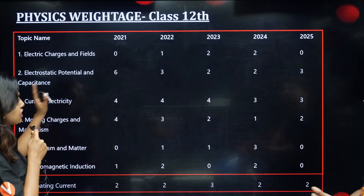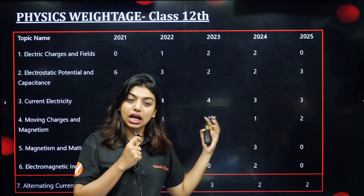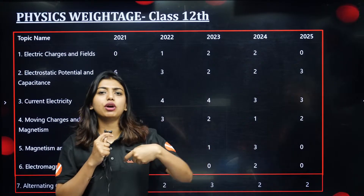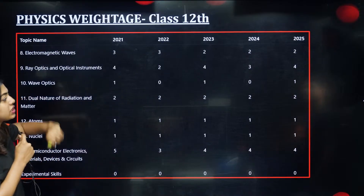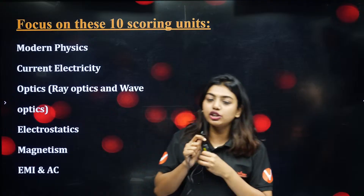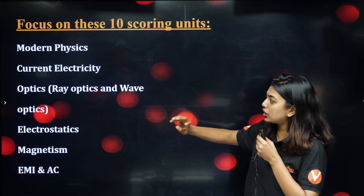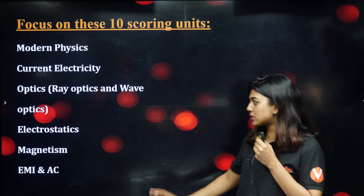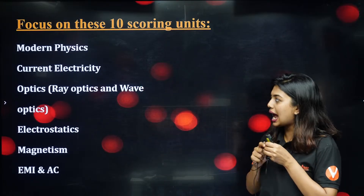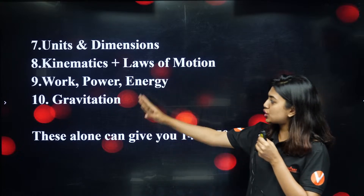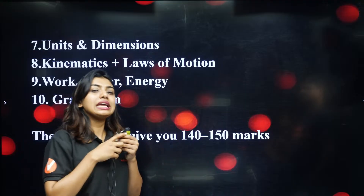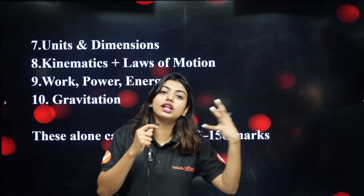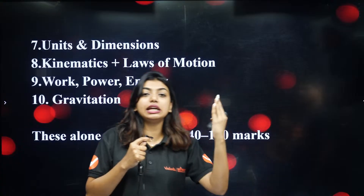Volume 1 includes Current Electricity. Class 12 topics are very important — you can prepare for NEET as well, but you have to practice more PYQs and MCQs. The top chapters you are not supposed to miss are: Modern Physics, Current Electricity, Optics — Ray Optics and Wave Optics — Electrostatics, Magnetism, EMI and AC, Units and Dimensions, Kinematics and Laws of Motion, Work Energy Power, and Gravitation. If you focus properly on these chapters, scoring 150 to 160 is easier. But just knowing the chapter is not enough — MCQ practice is important.